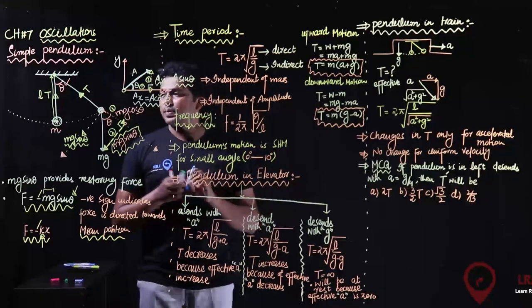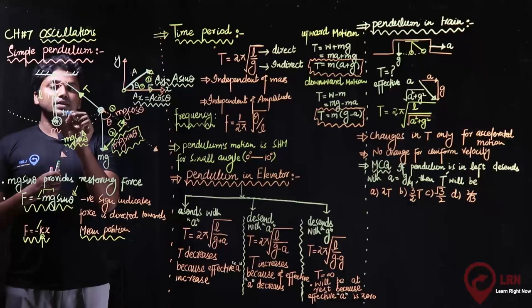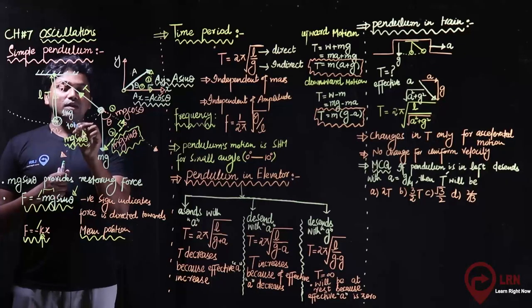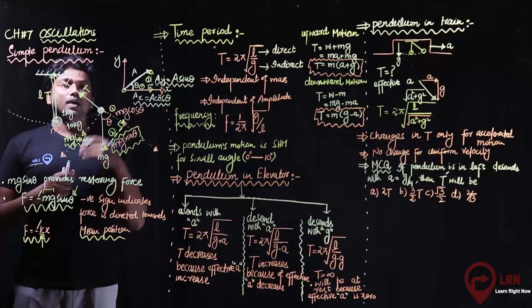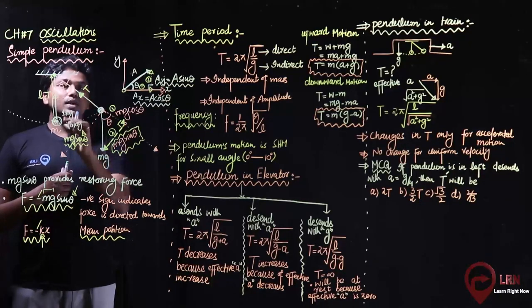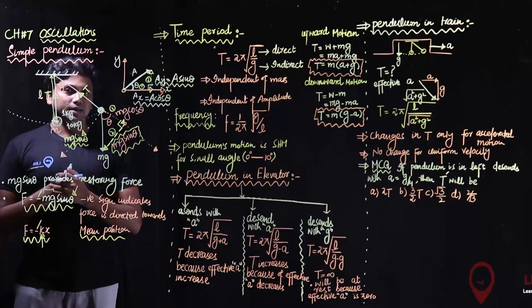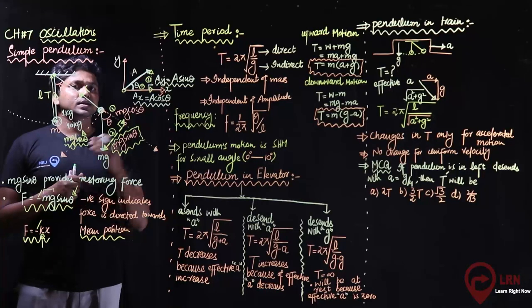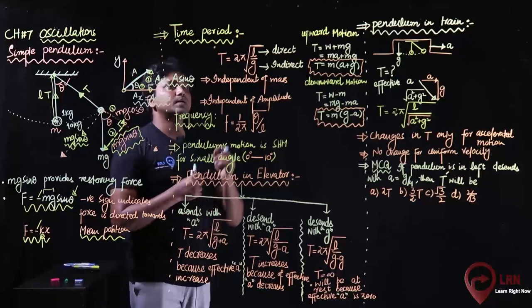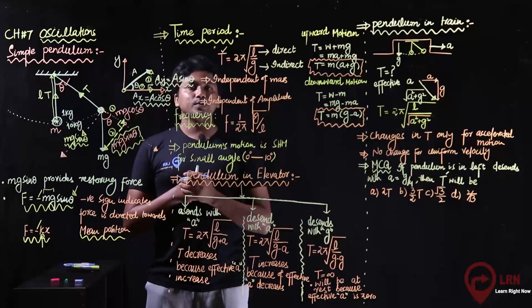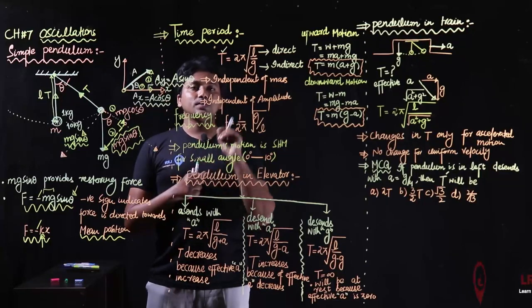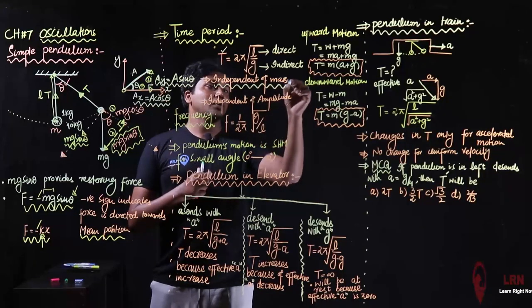If you have a pendulum with a ball of 1 kg and you replace it with a ball of 10 kg but keep the same length, the time period will not change. If you recall the formula, mass does not appear in it. So increasing or decreasing mass makes no difference to the time period. We say that the time period is independent of mass.